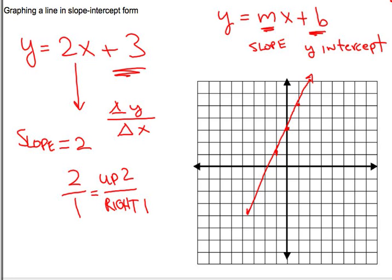Once I'm in slope-intercept form, I only really need 2 pieces. I have the y-intercept, which I plot first, which I plotted at 3. And then my slope, which I break down into the change in y or the change in up and down values versus the change in left and right values.